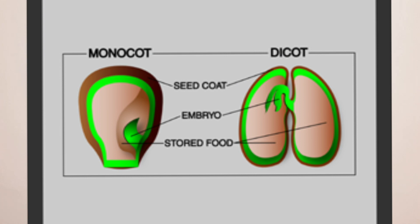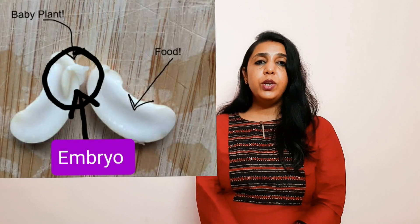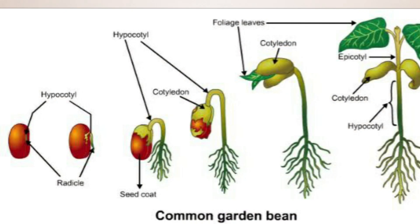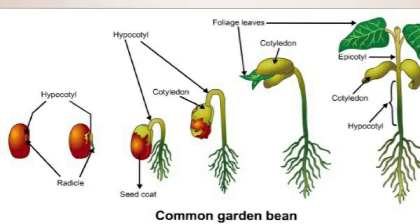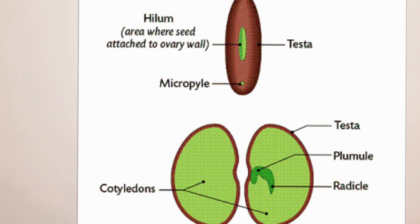The stored food in cotyledons is used by the growing seedling. The third part is the embryo. The embryo is the baby plant which lies between the cotyledons. The embryo is the one from which the root and shoot come. It contains two parts: the radicle and the plumule. The radicle is the part which becomes the roots, and the plumule grows into the stem.